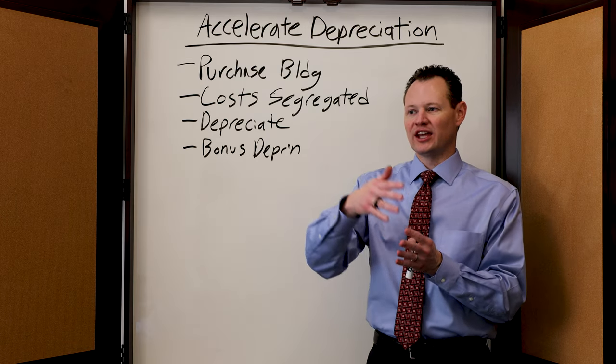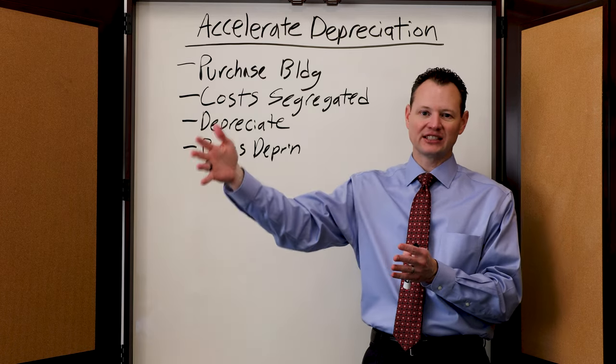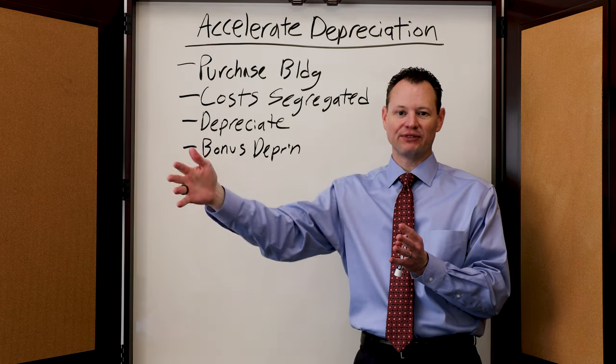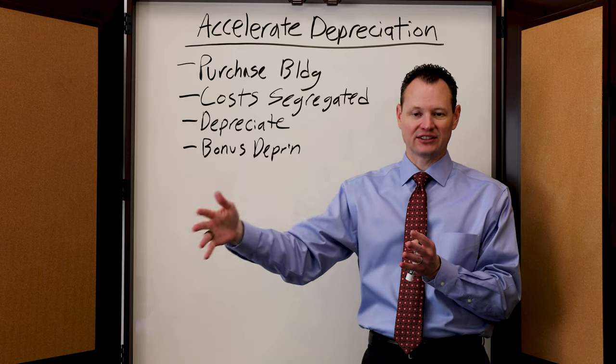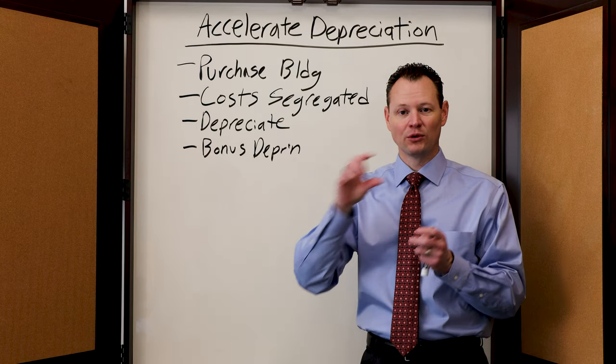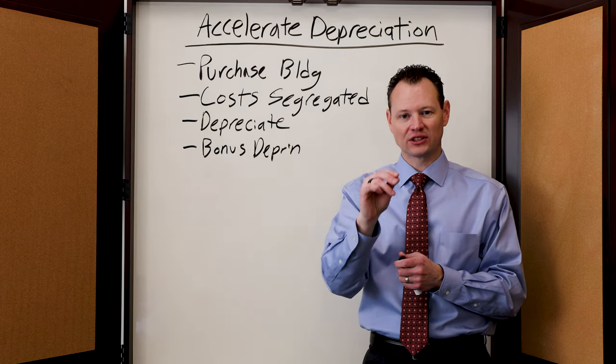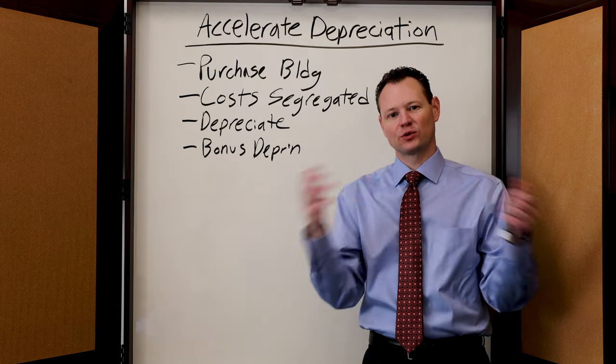So if you take a 37% deduction and then down the road recognize a 25% income tax on that for the depreciation recapture, there's a 12% difference there. On $100,000, a 12% difference is $12,000.